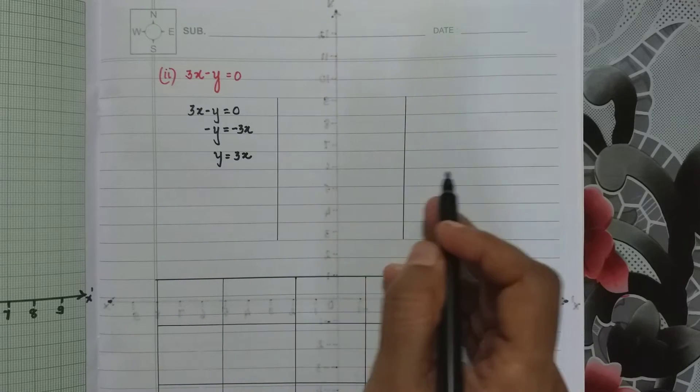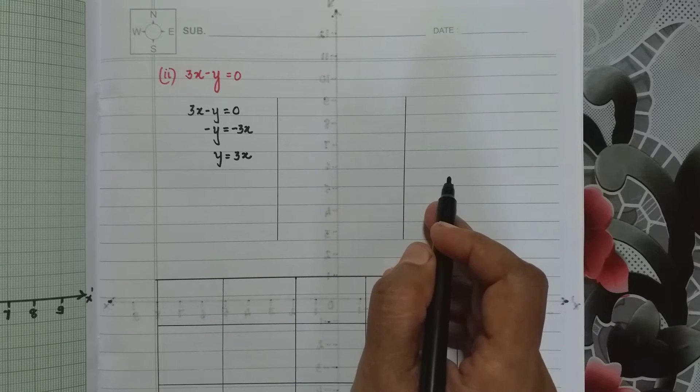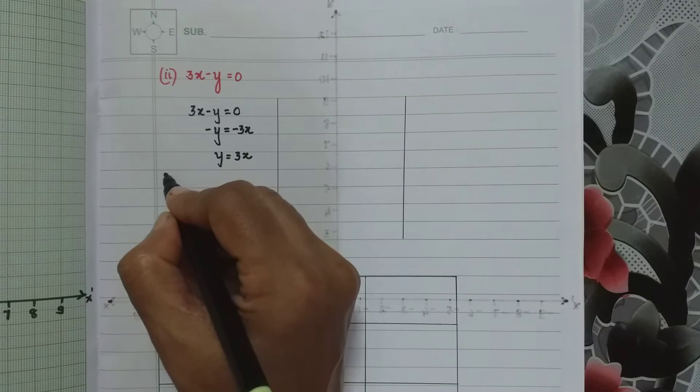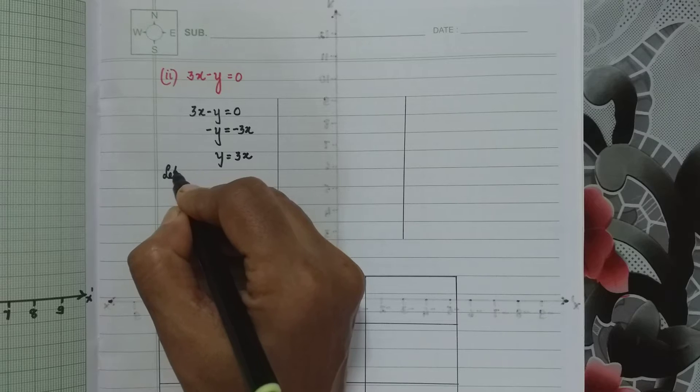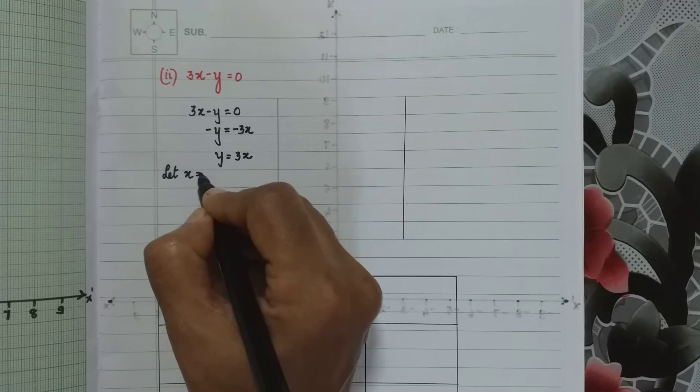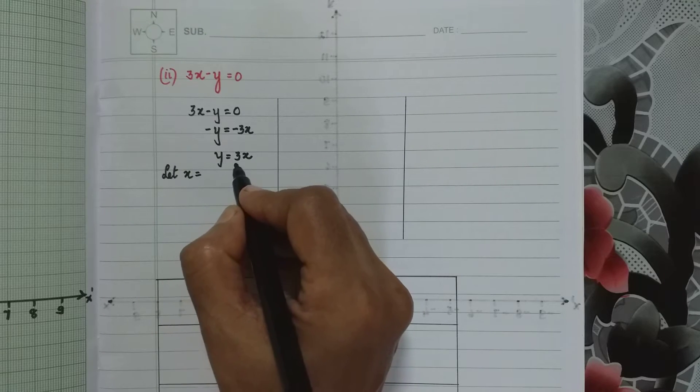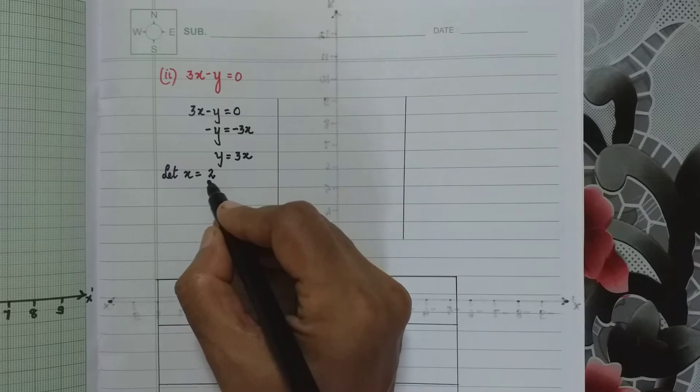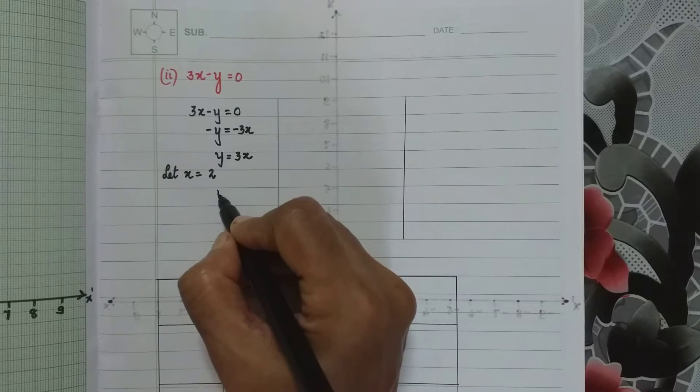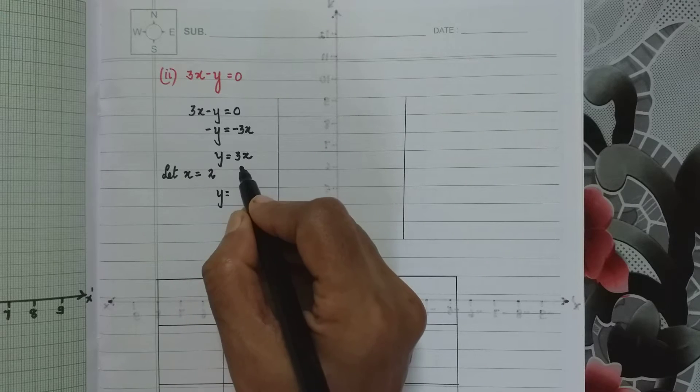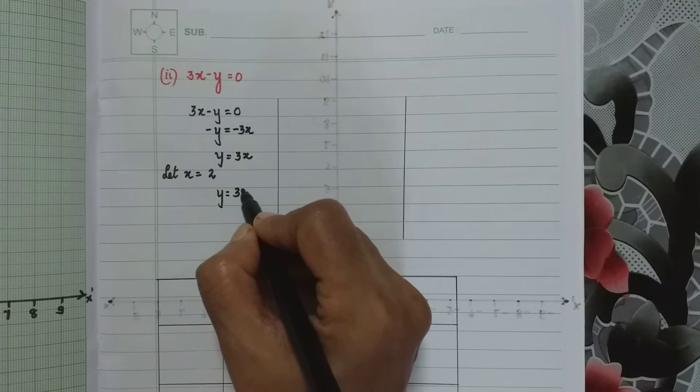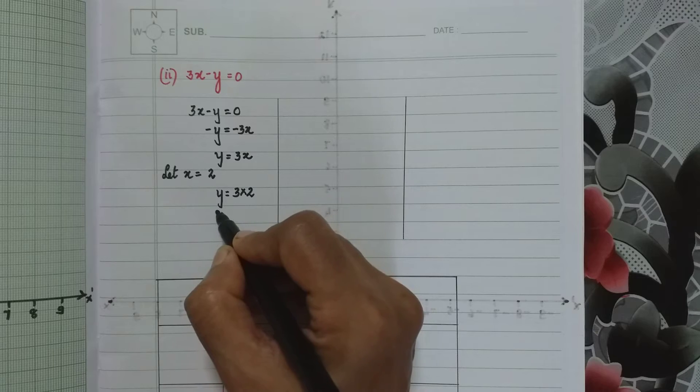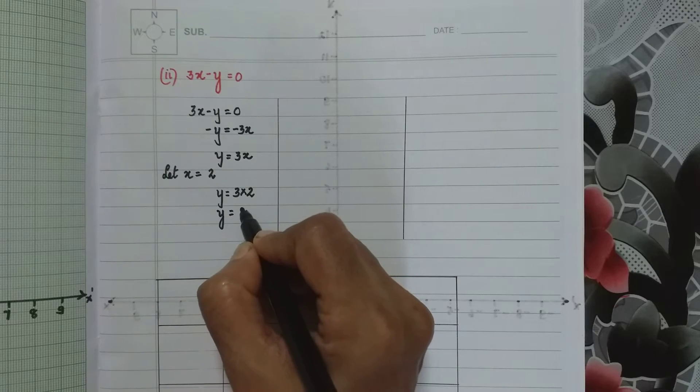So let us take now, let x equals, suppose we take x equals 2. So it is a positive value. Therefore y equals 3x, that is 3 times 2. So y equals 6.